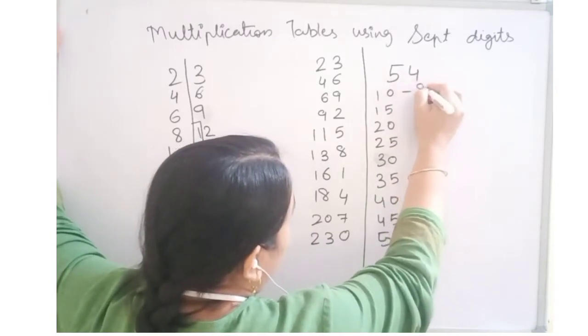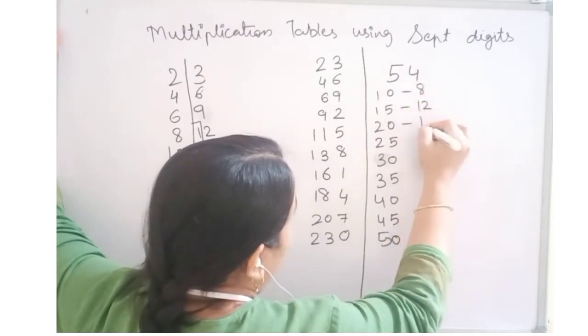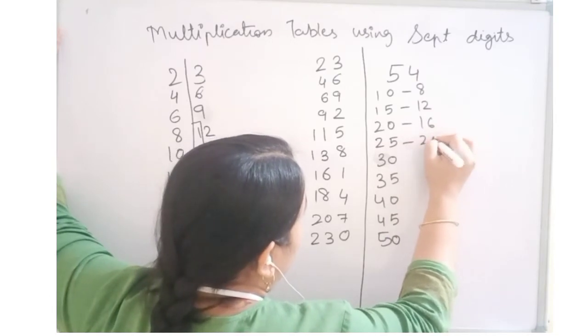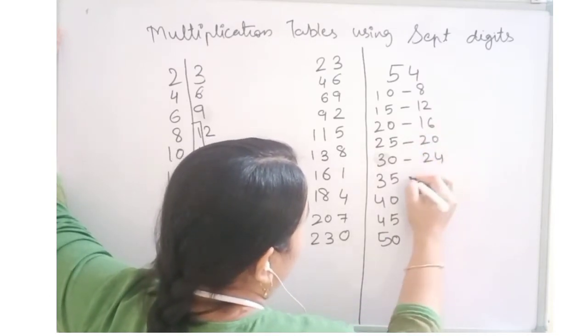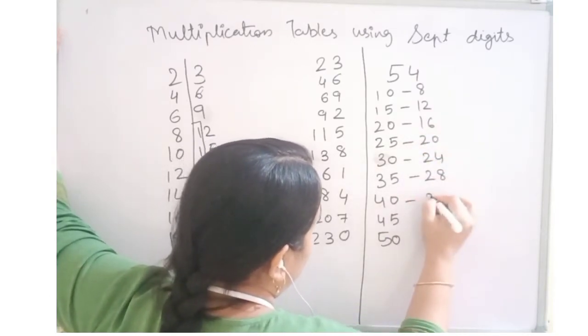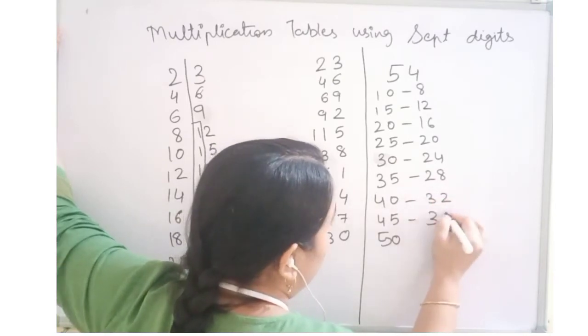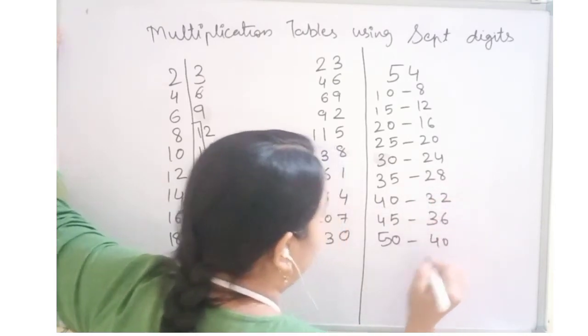Now for 4: 4, 8, 12, 16, 20, 24, 28, 32, 36 and 40.